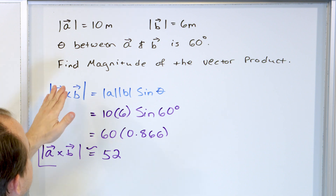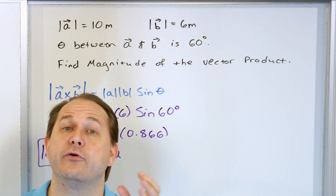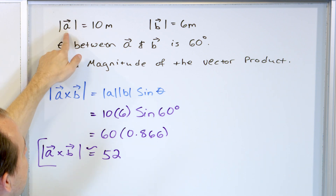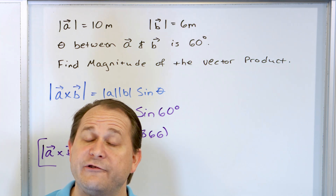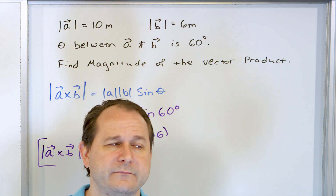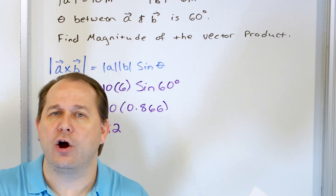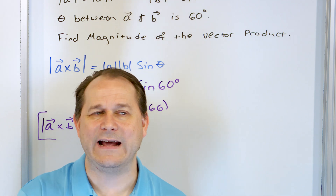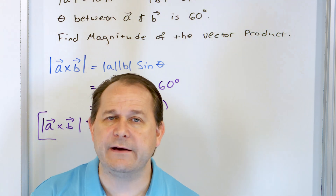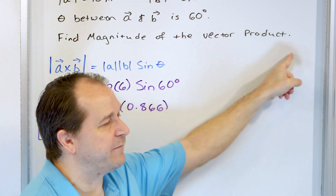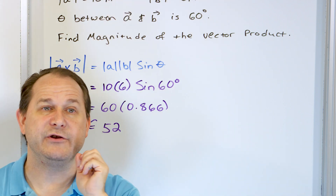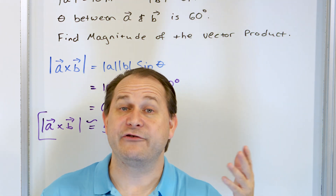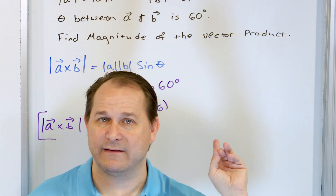If the problem asked for the actual cross product vector, I would need both the magnitude and its direction. The only way to find the direction is with more information, because AB sinθ only gives the length. I would need to use the right-hand rule and curl my fingers. Since I don't know where A and B are in space — they could be pointed in all kinds of directions — I cannot find the full cross product including direction. But the problem doesn't ask for that.